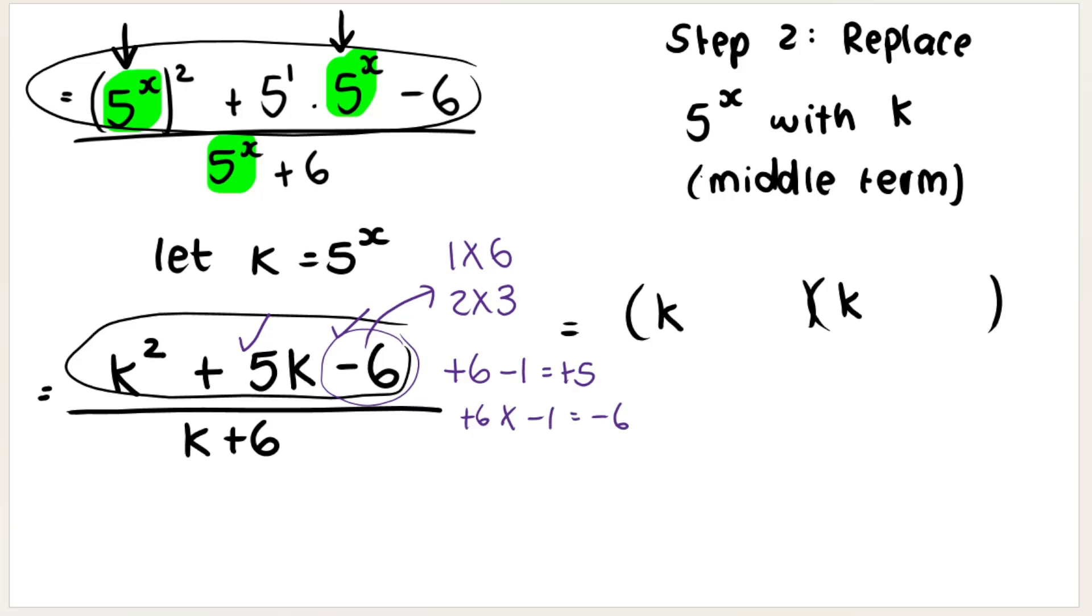If you need help with how to do trinomials, I have lots of videos. I know I did that quick, but positive 6 is going to be in my one bracket. Negative 1 is going to be in my next bracket. That's the top. The bottom of the fraction is K plus 6.